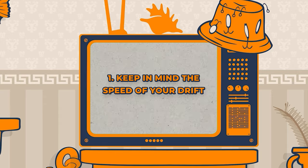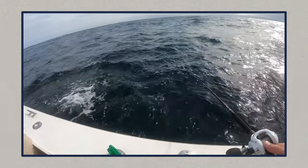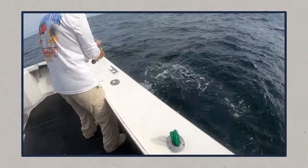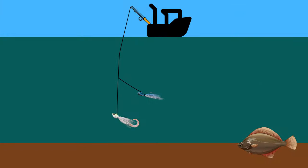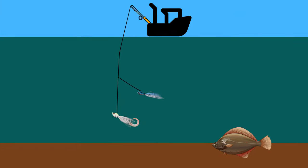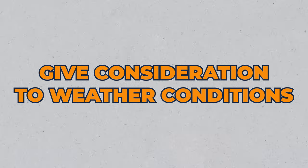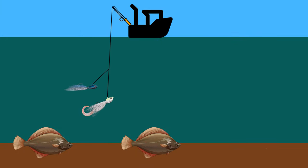The first tip is to keep in mind the speed of your drift as well as the sea conditions that you might be fishing. If you have a fast drift and a rough sea — a big swell or a lot of wind chop — the boat's moving on the surface of the water, and that in and of itself is adding a lot of action to your jigs.